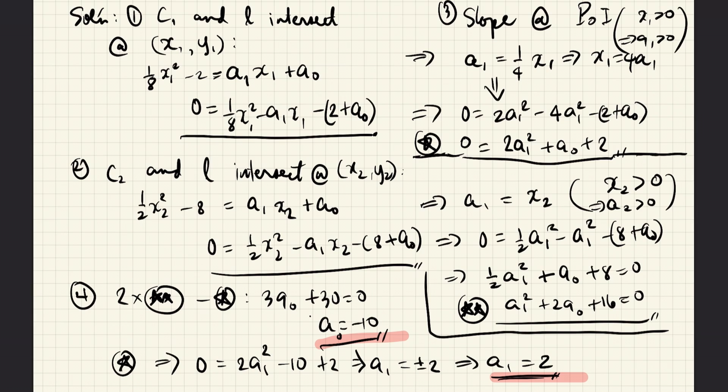Now, we use the fact that at the point of tangency at x1, y1, the slope of L, which is a1, is equal to the derivative of C, which is in this case (1/4)x1. And so we obtain this equation, which now gives us this equation. This means that we can now eliminate the x's here. We replace each x1 with 4a1. And by doing that, we obtain this new equation. Simplifying, we get this equation, which we shall call Star.